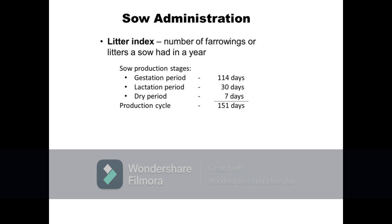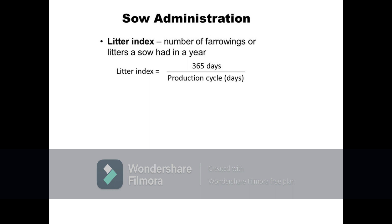A typical sow production cycle includes a 114-day gestation period, 21 to 30-day lactation period, and 3 to 7-day dry period, giving a production cycle of about 138 to 151 days. The shorter the production cycle is, the better, as sows would have higher frequency of farrowing or higher number of litters as the production cycle decreases. Litter index is calculated as 365 days in a year divided by the production cycle in days, which may also be represented as the interval between two consecutive farrowings in days.